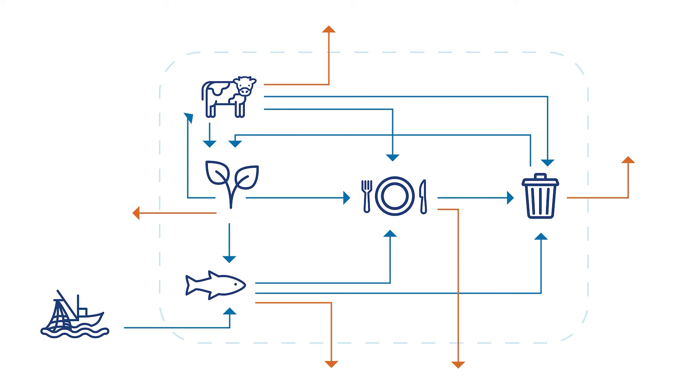Now a circular economy would try to take all these byproducts, which we already do today at Biomark - trimmings, different parts of the fish that are unusable for humans - and try to produce new products out of this, so that we keep all of our waste in the economy rather than losing it to our environment.